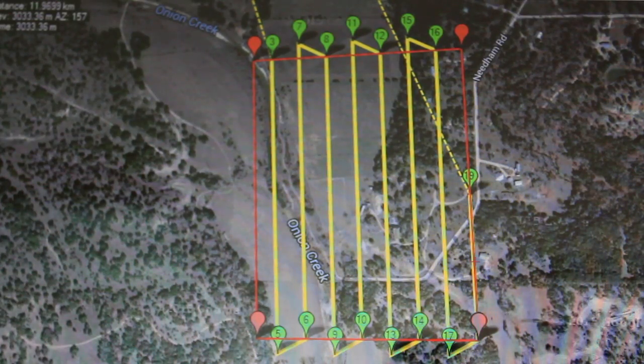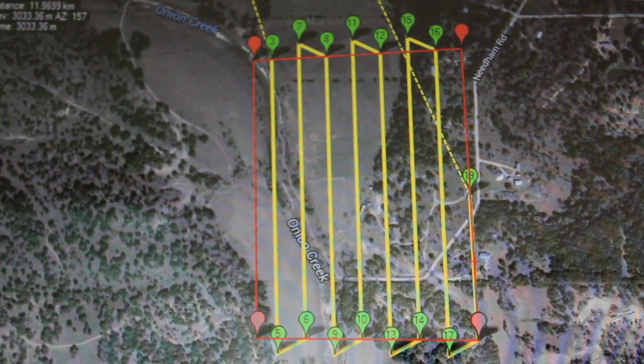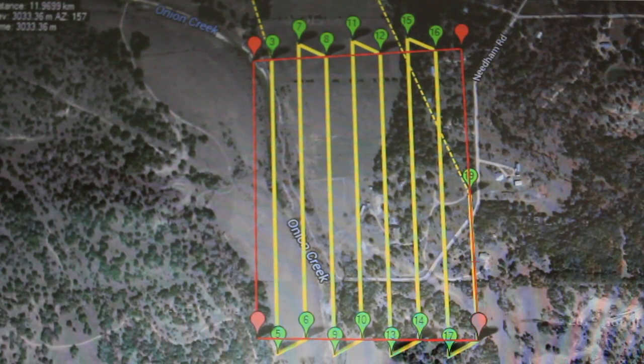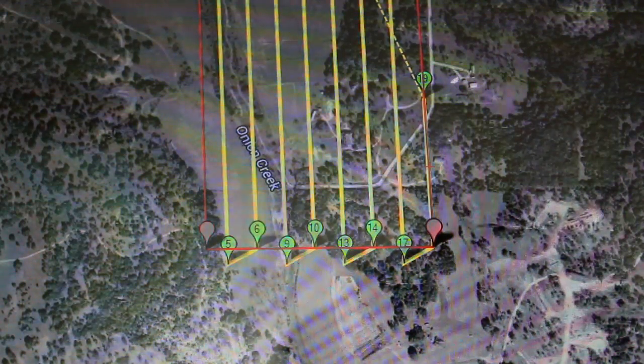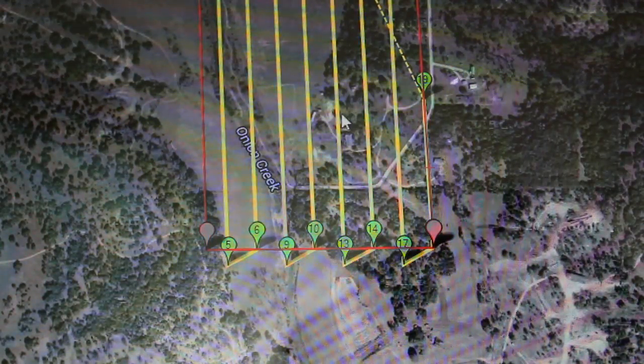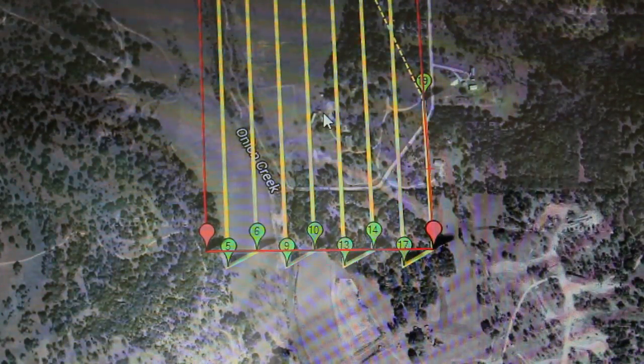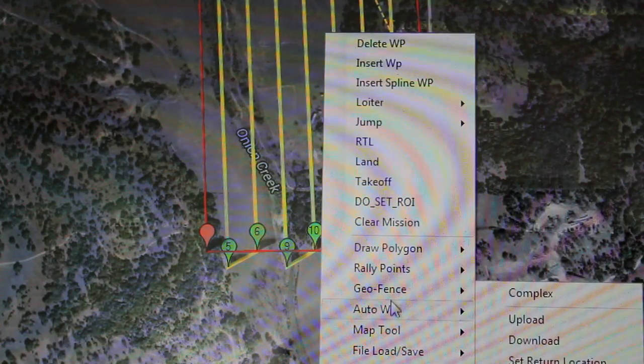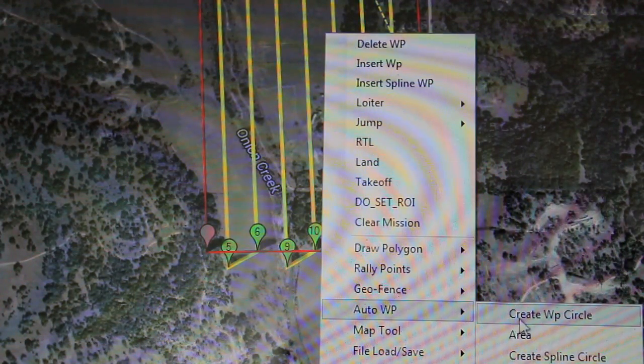You can see the mission here. This was the first one. Ran it, everything went well. Photos look great. I stitched them all together, so everything was working fine. Then I wanted to go and fly another piece of the property. So after landing I switched out my camera battery, put a new battery in the Juggernaut, went in and created a new mission.